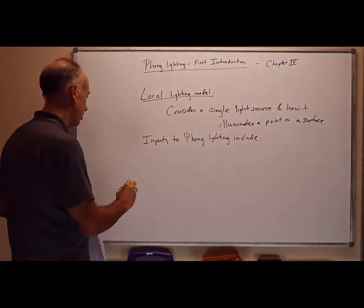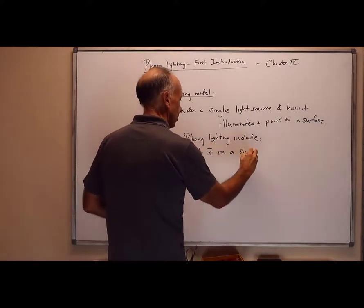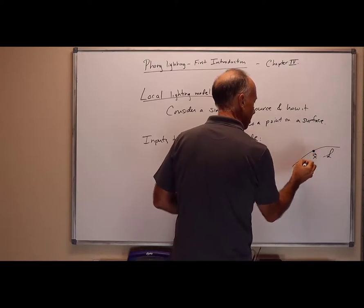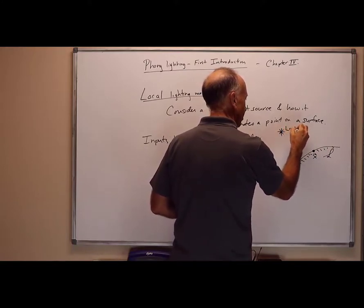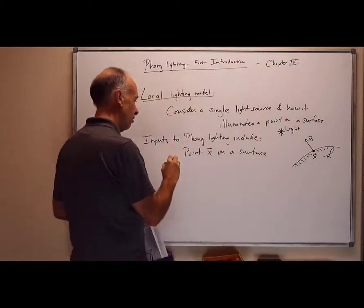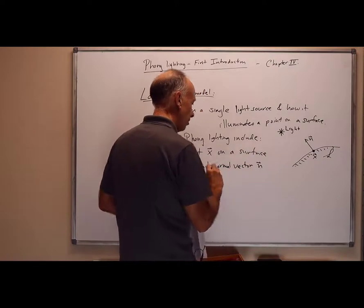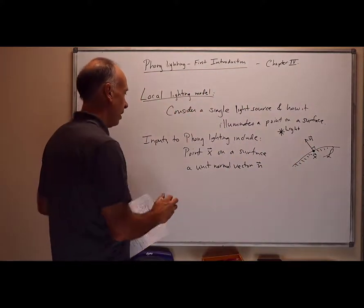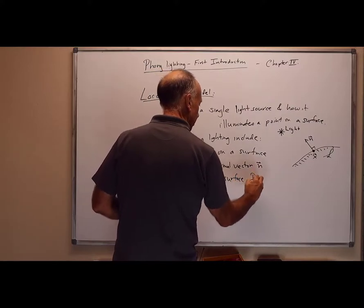The inputs to a Phong lighting calculation include the following. We're going to have some point on a surface, and I'll call it x — it's the position of the point. Here's our surface S, here's a point x sitting on it. There's some light source illuminating that point on the surface. There's a normal vector, a perpendicular vector n, which is a unit vector — a unit normal vector. Unit means it has length one, and normal means it's perpendicular to the surface, so it defines the orientation of the surface.